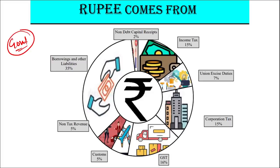From where does the government earn money? Income tax contributes 15% of total revenue. Union excise duty contributes 7%, corporation tax 15% — big corporations and MNCs pay this. Other sources include Goods and Service Tax, customs duty, non-tax revenue, borrowings and other liabilities, and non-debt capital receipts. These are the various sectors from which the government earns money.